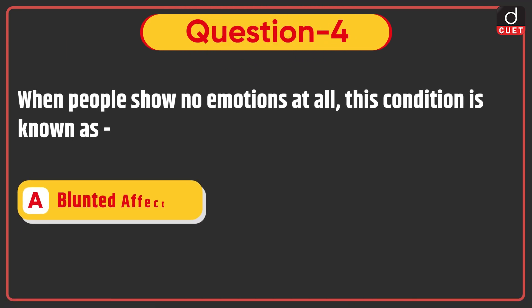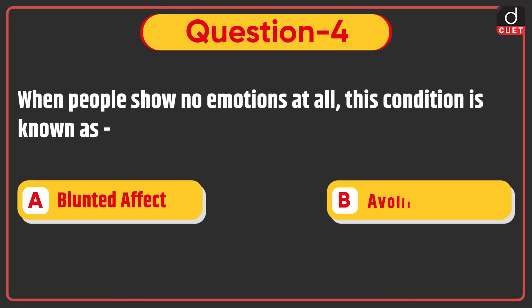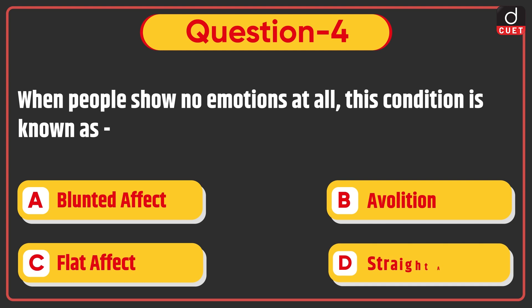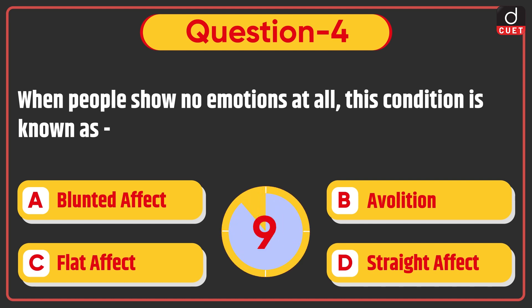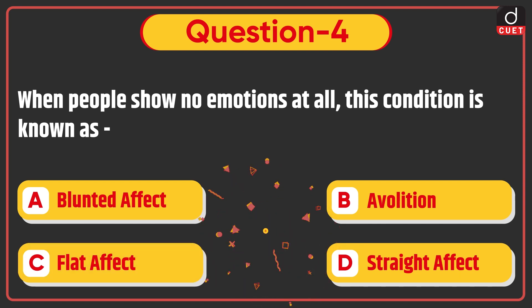Next question is: When people show no emotions at all, this condition is known as — Blunted affect, Evolution, Flat affect, or Straight affect? The correct answer is option C, Flat affect.